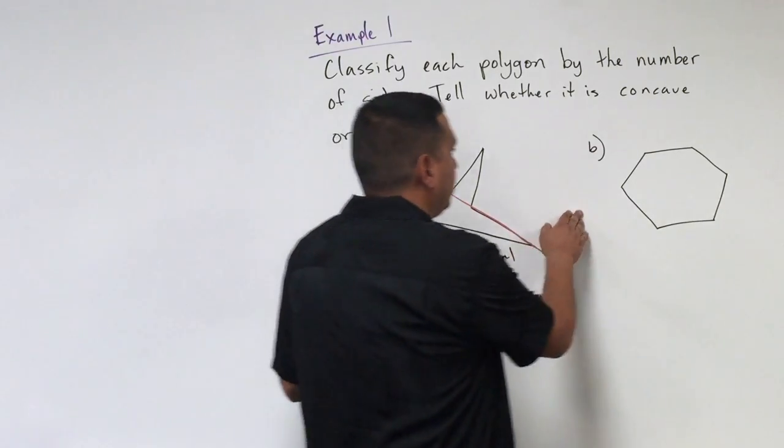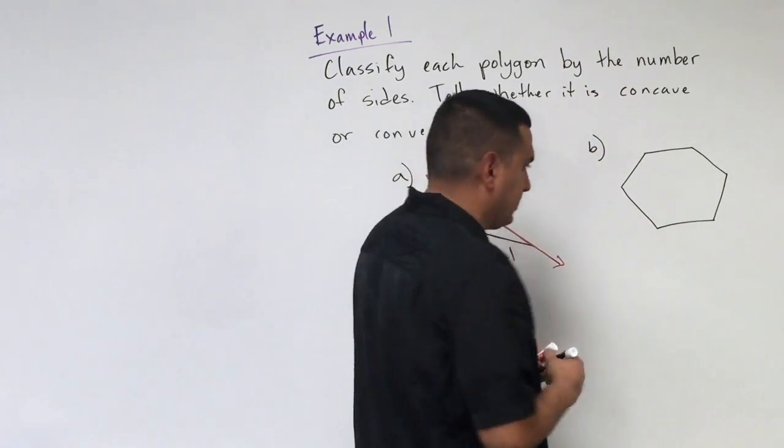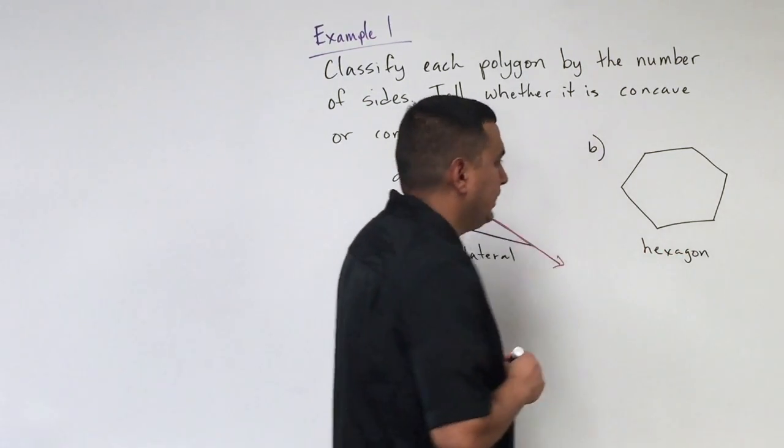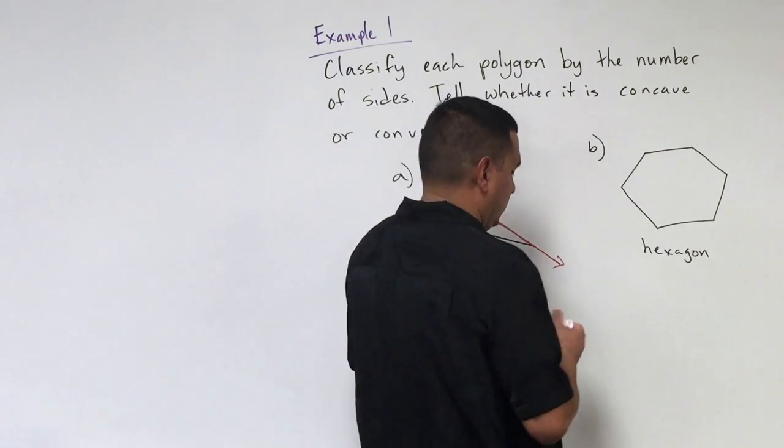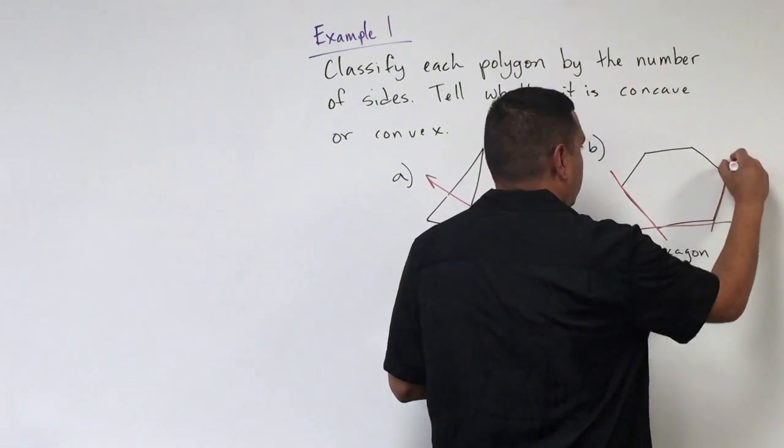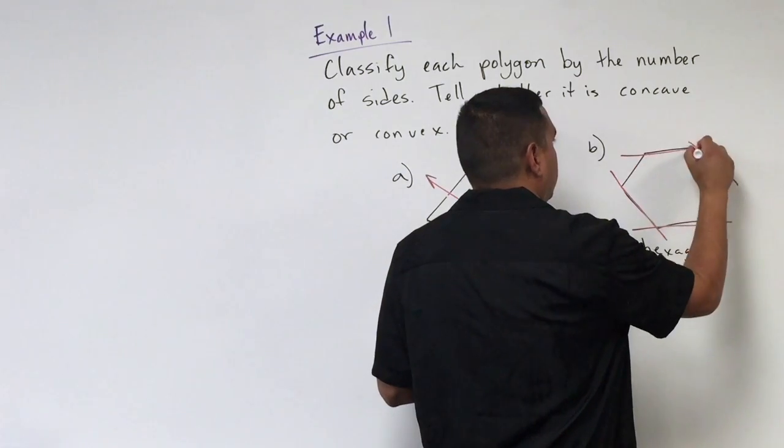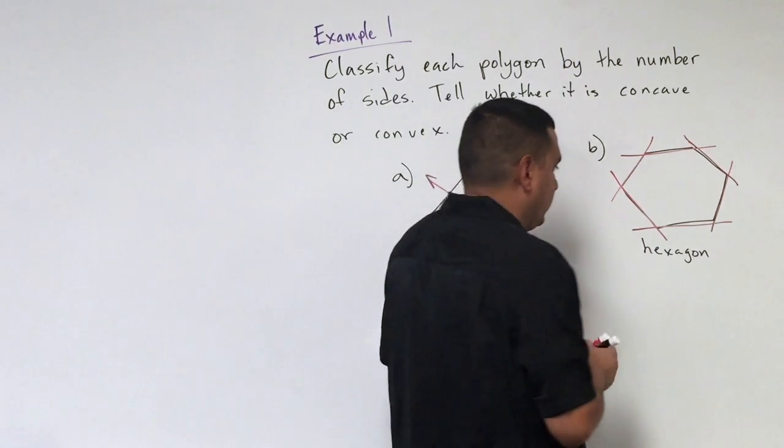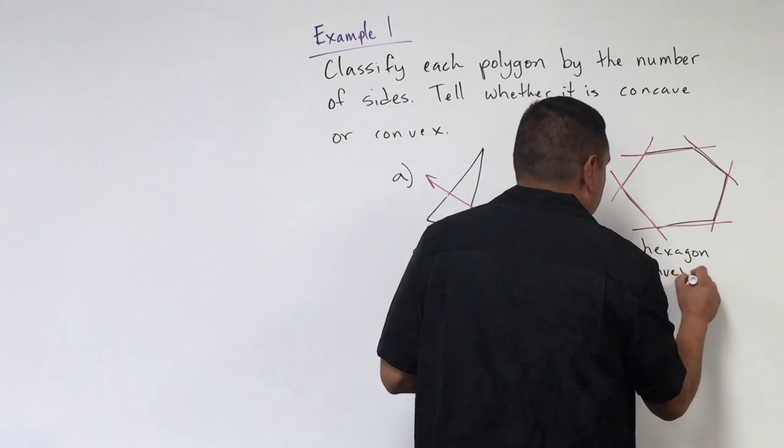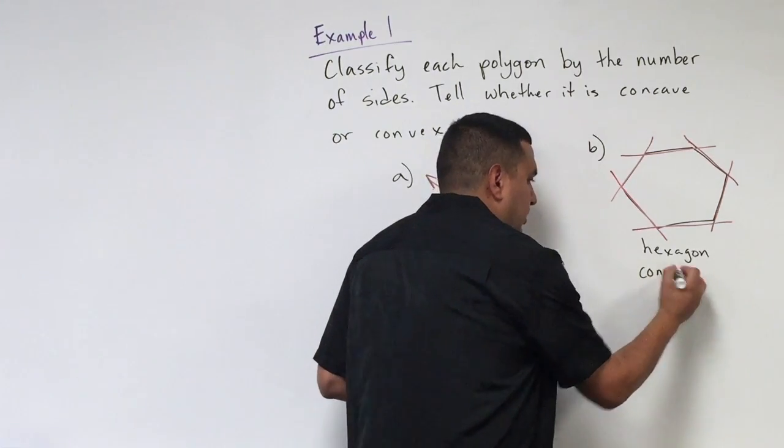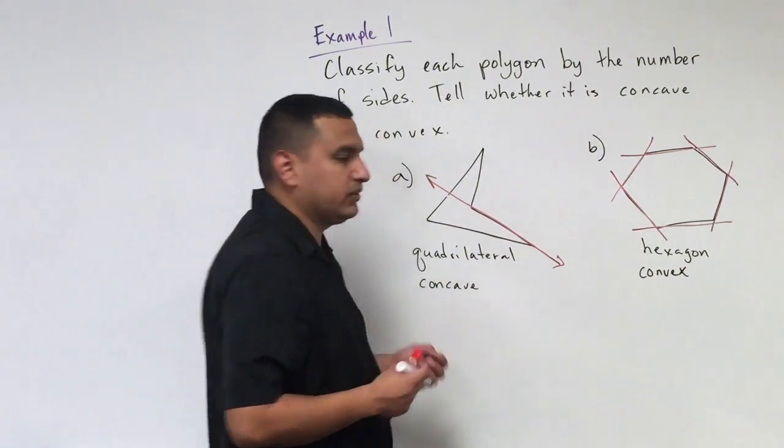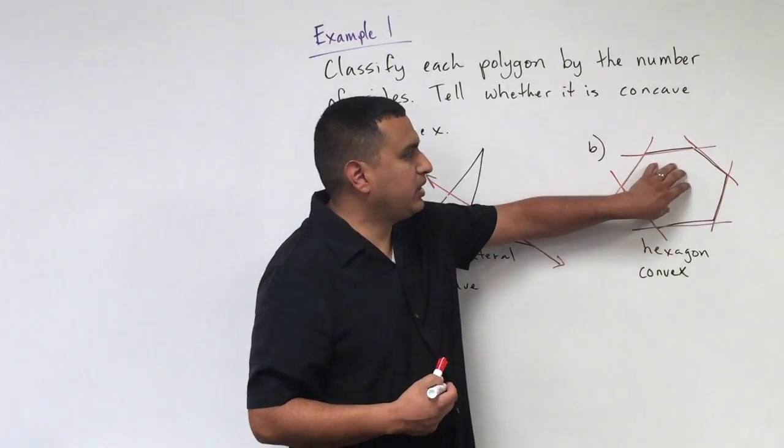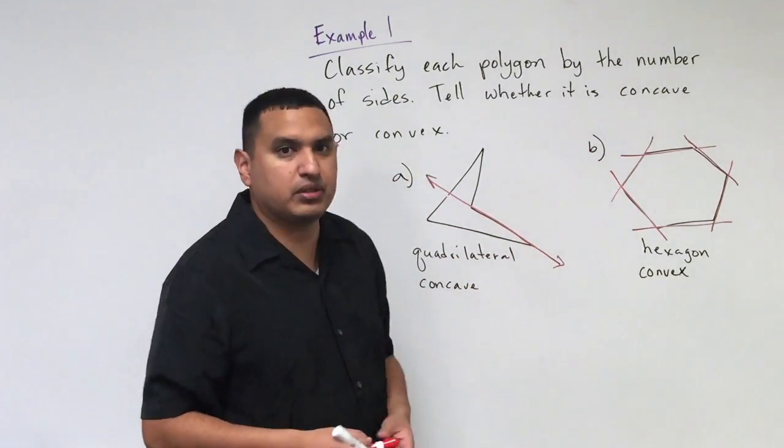And then this example B, well first it has six sides, so that means it's a hexagon. And then if I were to extend all of these out, I'm not going to get any that would actually cut across the inside, the interior of the polygon. So that means it's going to be convex. And so on a lot of these geometry problems, you'll hear convex polygon, or convex hexagon, convex pentagon. And that's just going to mean these kind of basic general shapes that we're familiar with.